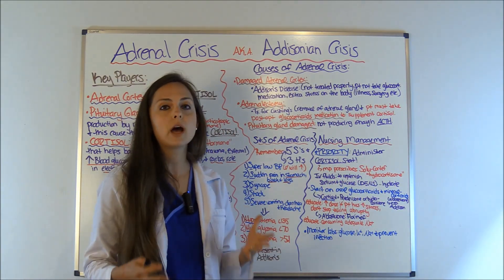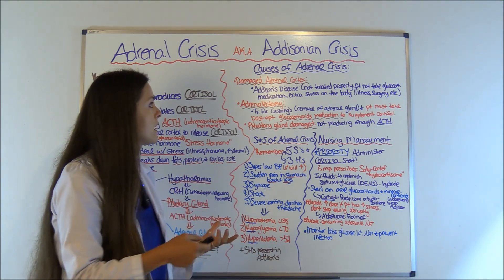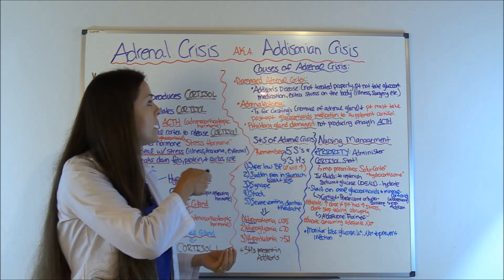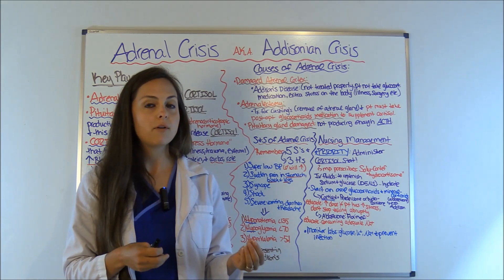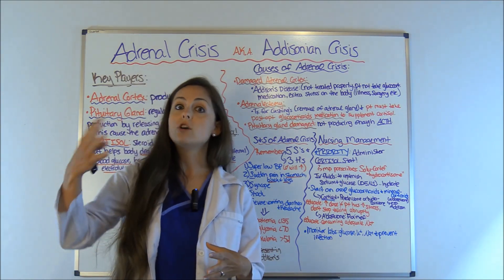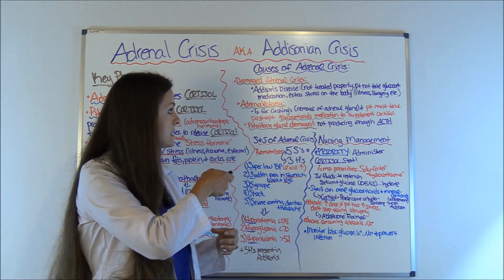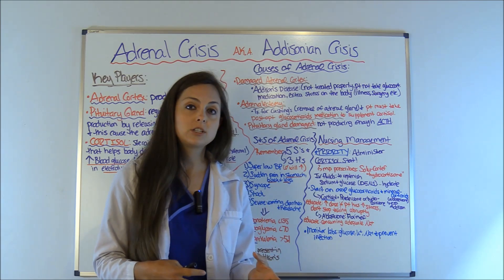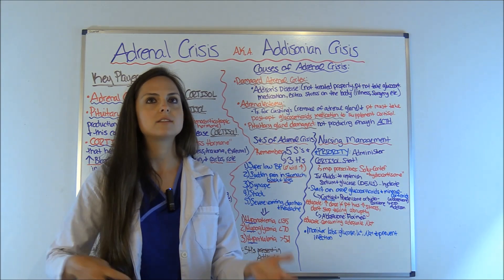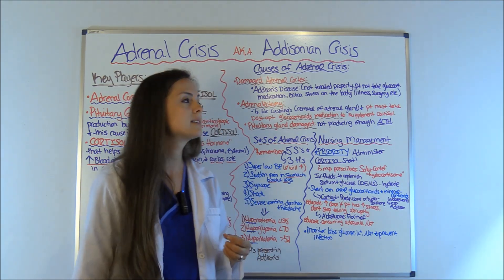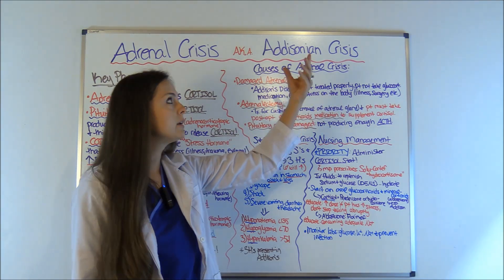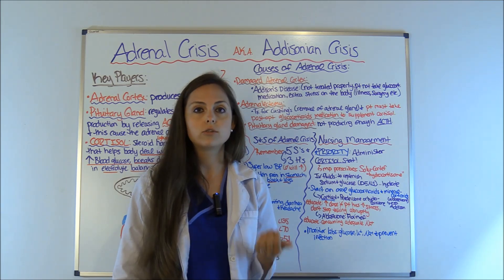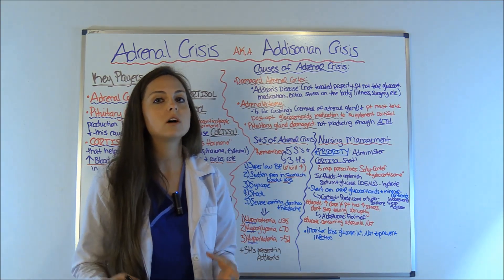So who goes into adrenal crisis, Addisonian crisis? Number one, they either have damage to the adrenal cortex, which produces cortisol. Generally, people who have Addison's disease have issues with aldosterone and cortisol. If it's not treated properly — say they're not taking their medications, or they got sick, had surgery, or something stressful happened — it can throw them into Addisonian crisis, which is where that name comes from. Patients with Addison's disease are at risk for adrenal crisis because they already have a predisposition to low cortisol levels.